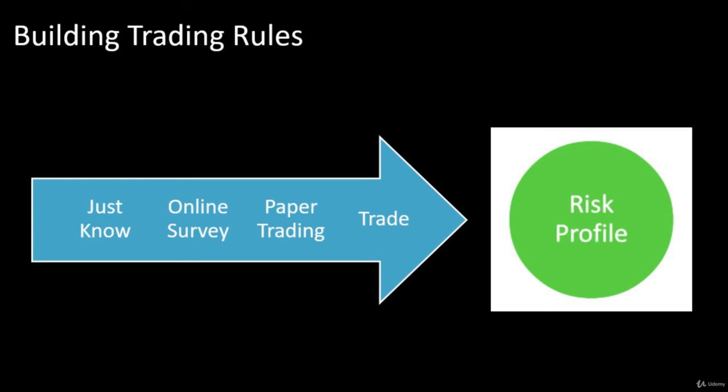An even better way is to actually paper trade and start seeing what the losses would be like, but also what the gains would be like — how successful your system is when you put together your trading rules and indicators. Getting comfortable doing all this is why paper trading is so important before you do real live trading. That's really the last step: determining your risk profile when you're trading real money.